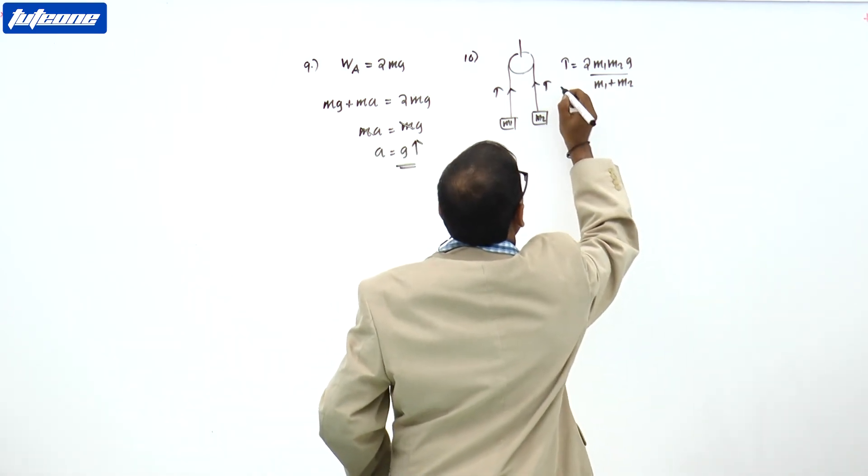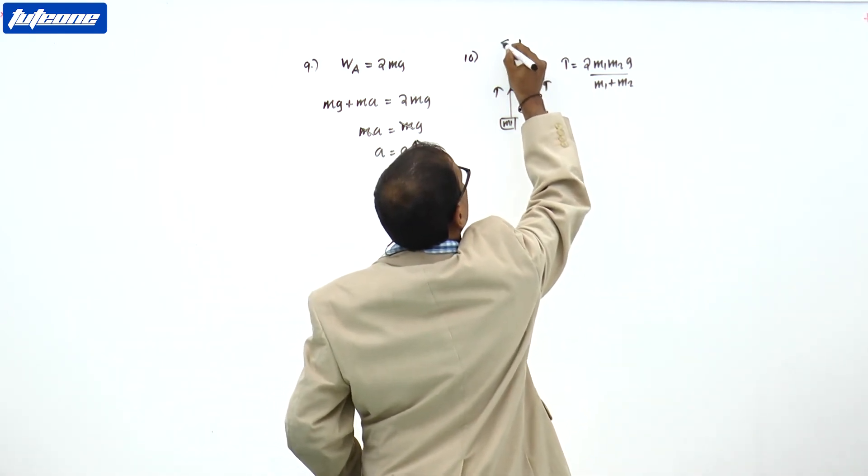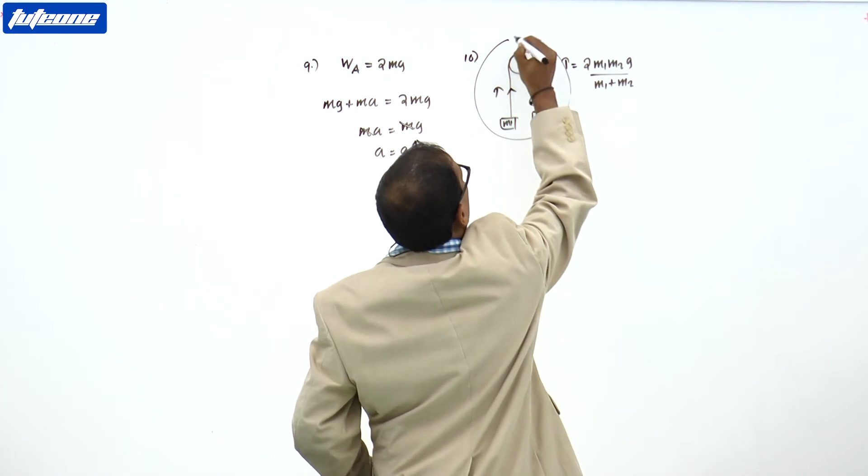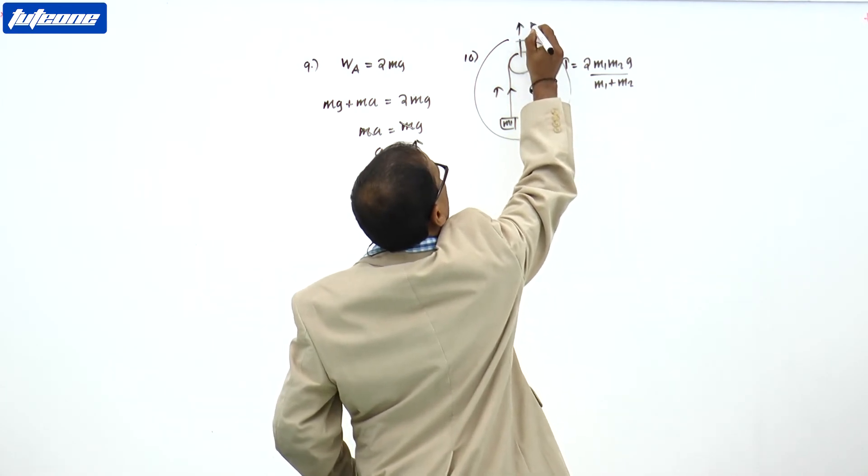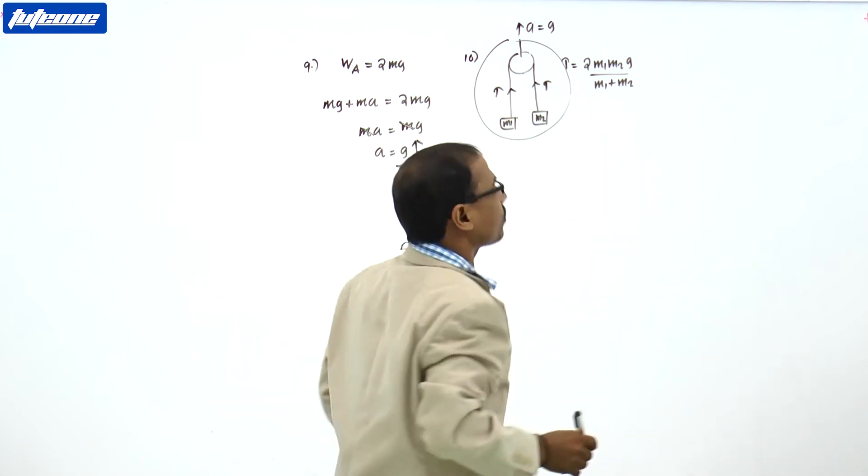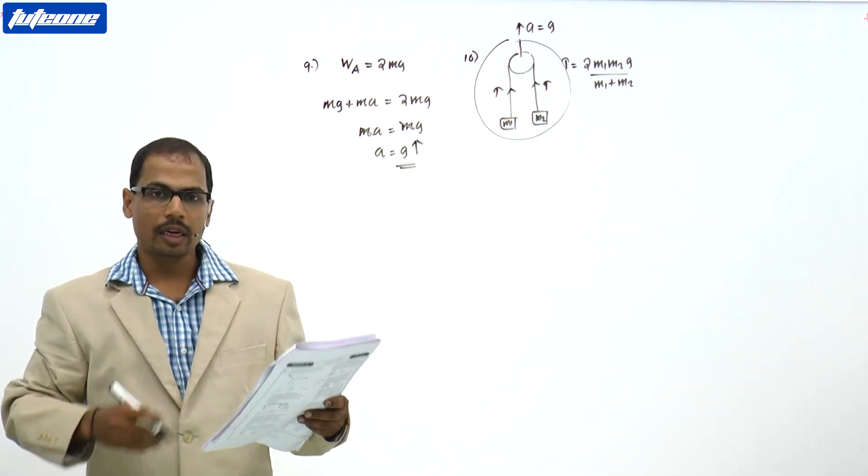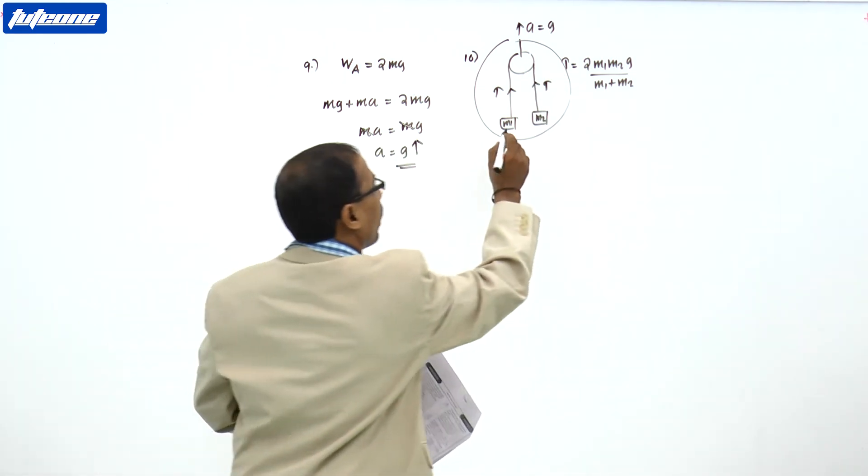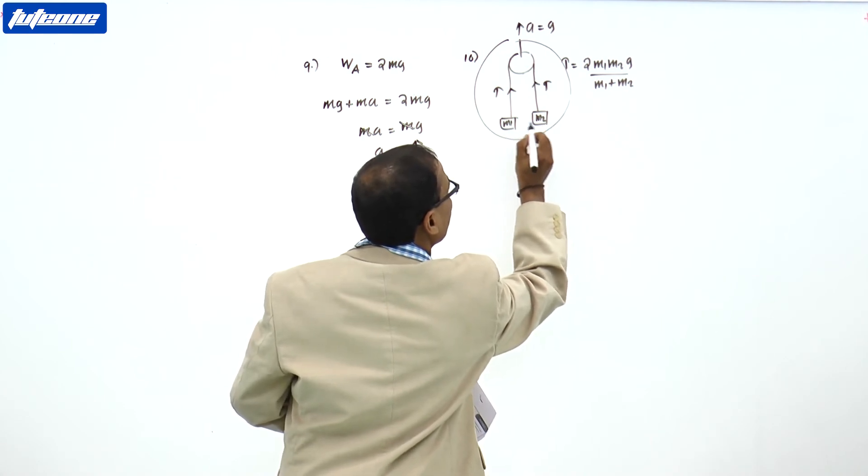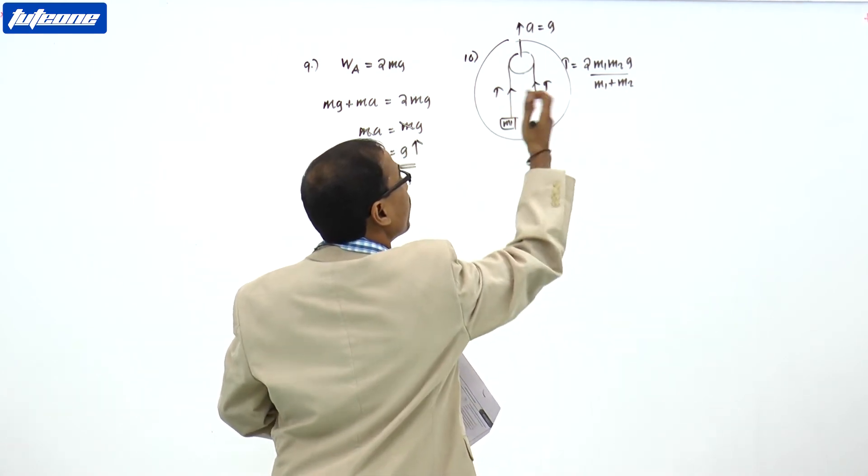But here you can see that this system is moving upward with an acceleration A equal to G. It means that the weight of these two bodies will be doubled.